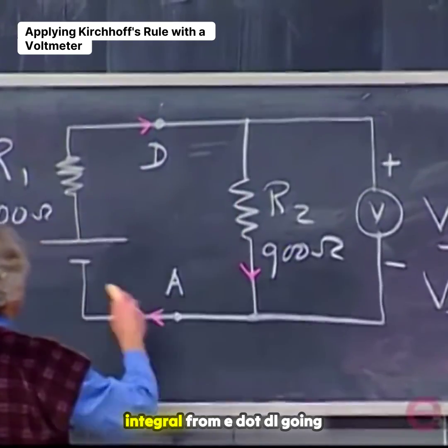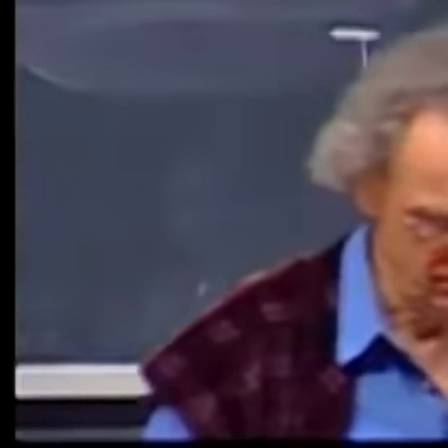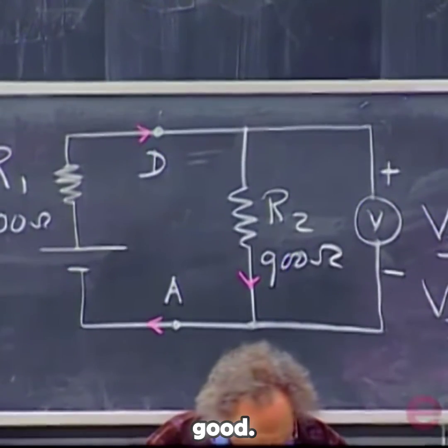The closed-loop integral from E dot dL going from D back to D is zero. So far, so good.